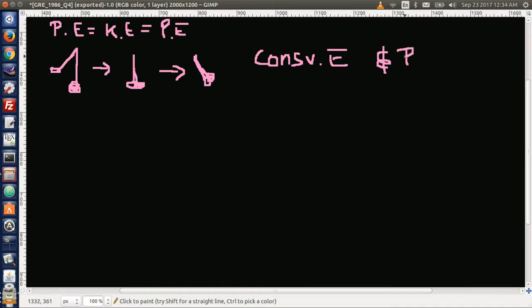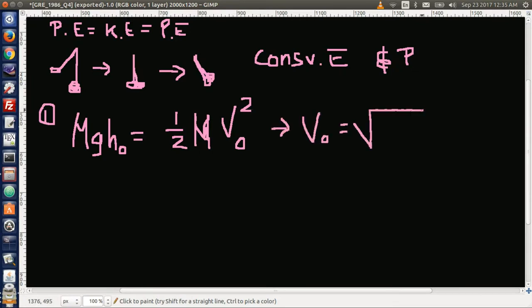Let's use those two laws. One: conservation of energy. We have the potential energy mgh₀ equals one half mv₀ squared. Let's solve for v₀: v₀ equals the square root of 2gh₀ because the masses cancel out.